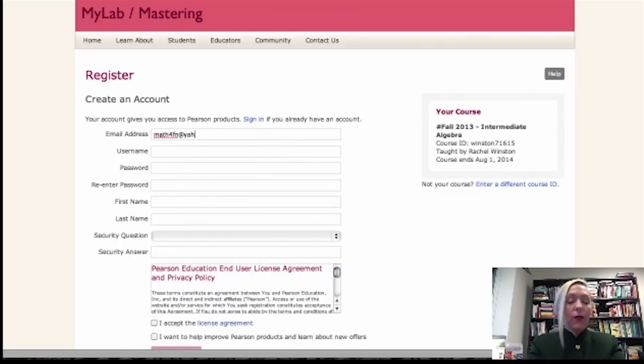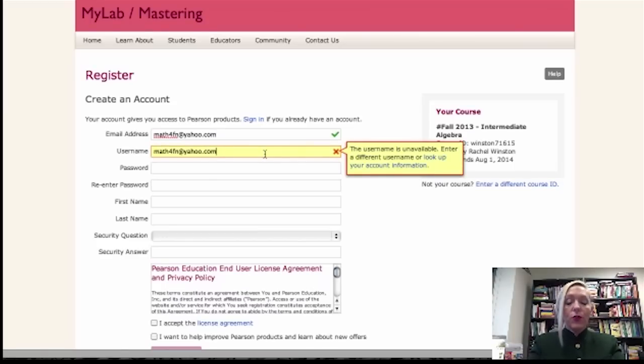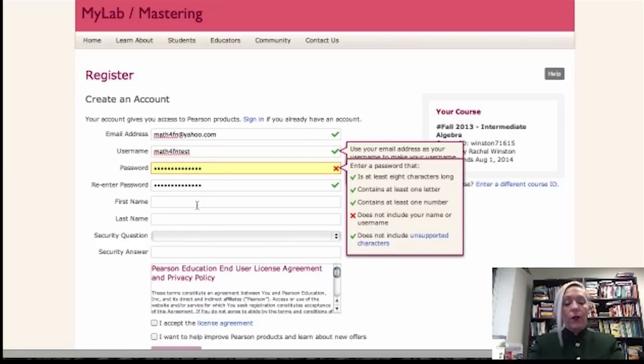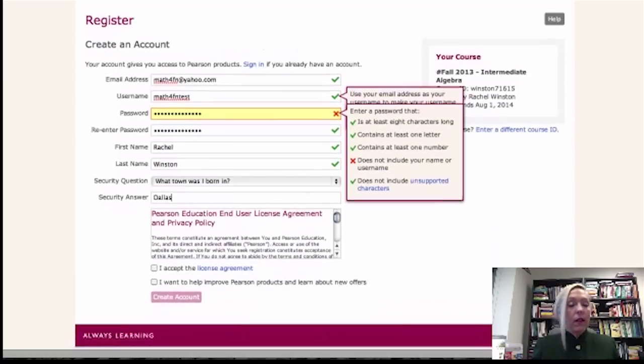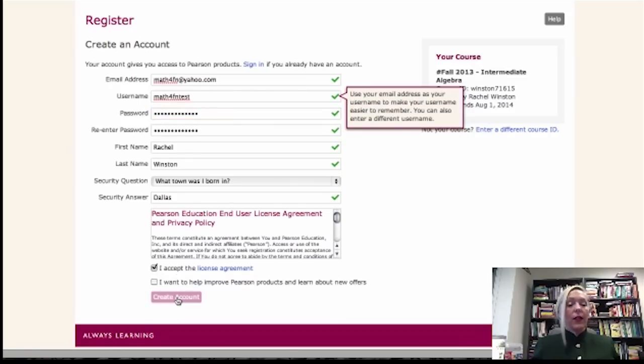I'm going to type in my email address, mathforfun at yahoo.com, and then a username. So, I'm going to choose a username. My first name is Rachel, and my last name is Winston. Security question, what town was I born in? And I was born in Dallas. So, then I check to make sure that's okay.